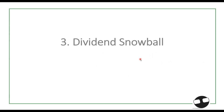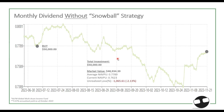The last strategy is the dividend snowball. This is only applicable to assets that pay dividends on a monthly or quarterly basis. It gives you an optimization of returns through two mechanisms: cost averaging and compounding. Basically, your dividends earn dividends, or your interest earns another interest — that's the core idea.